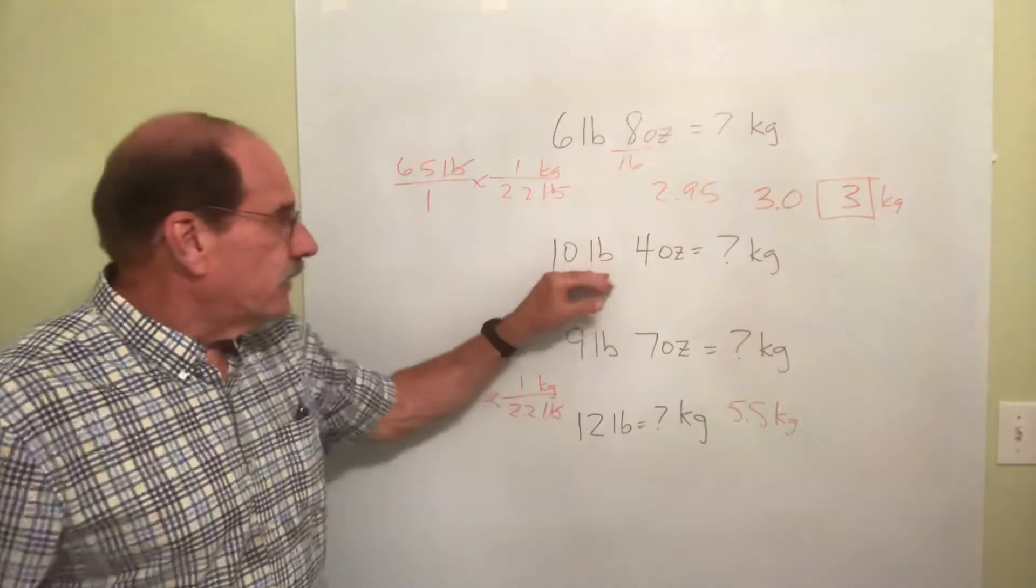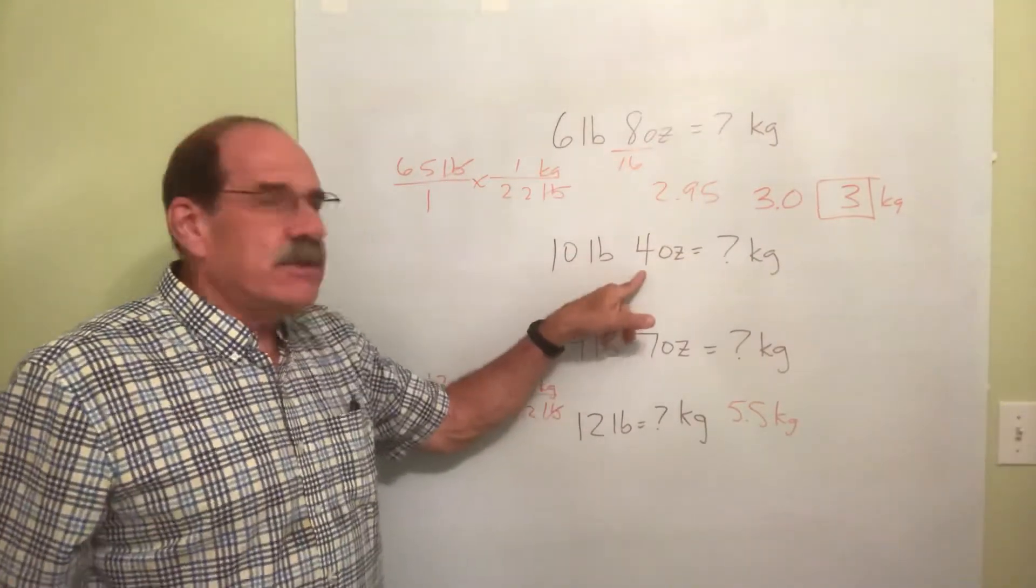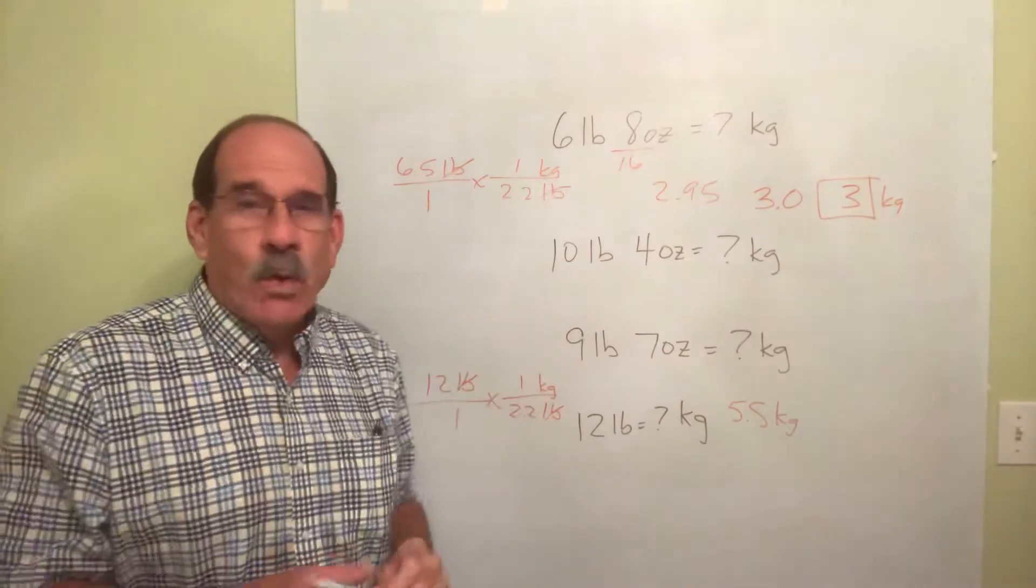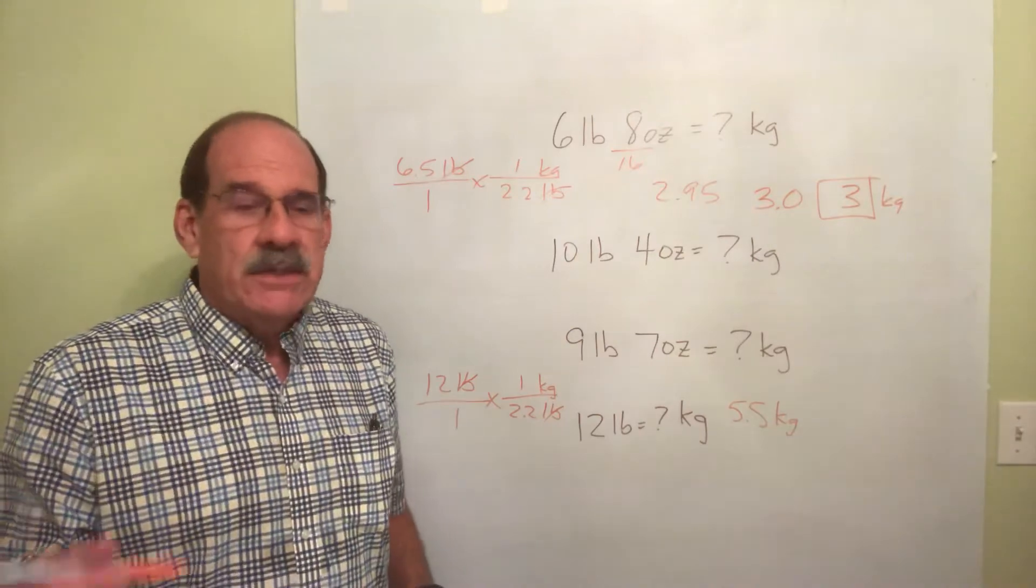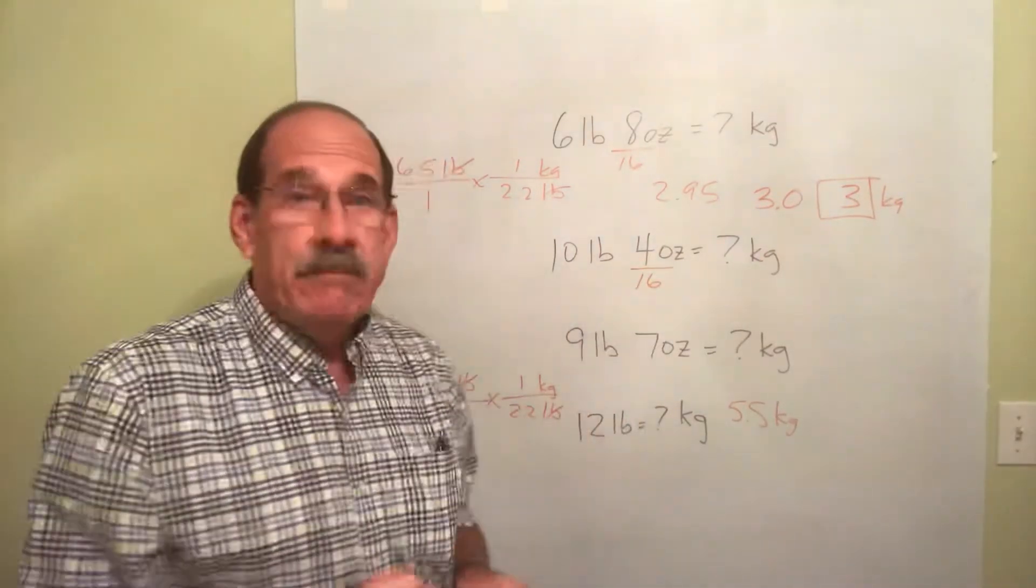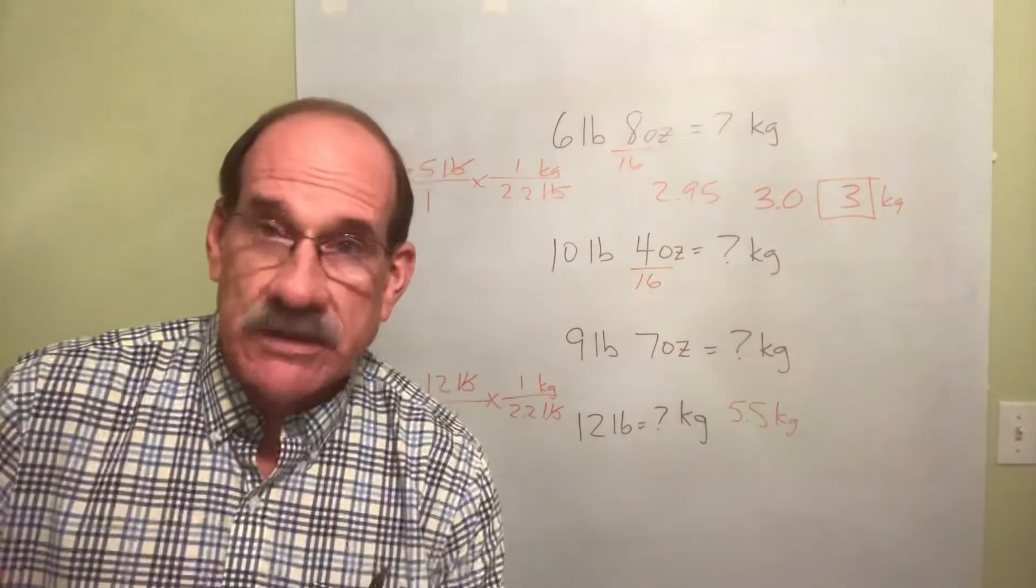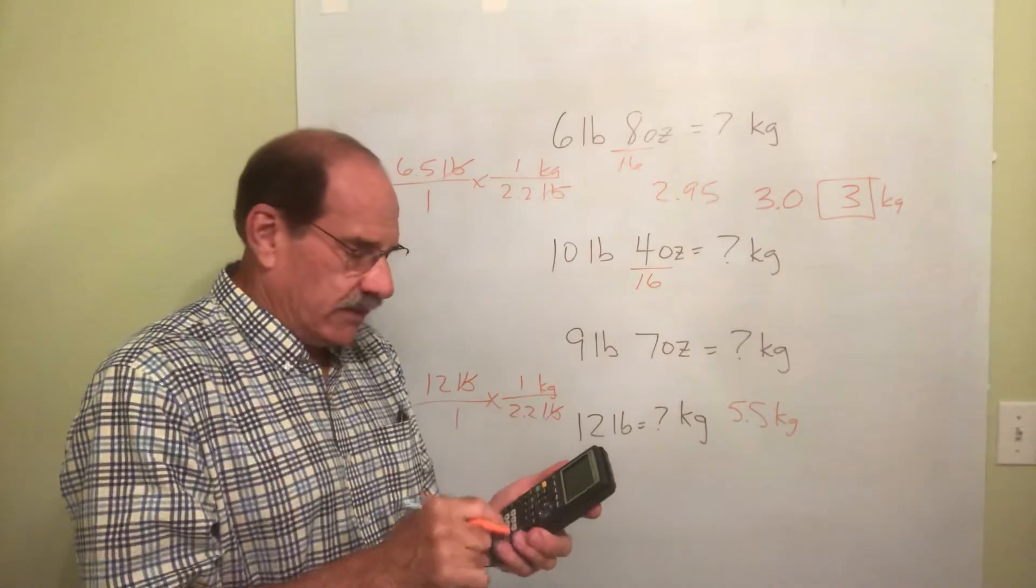Let's do another one. 10 pounds, 4 ounces. Well, we take the ounces. You can maybe do this in your head. 4 ounces is 1 fourth of 16, right? But just to prove it to you, you take the 4, divide by 16. Again, because there are 16 ounces in every pound. 4 divided by 16.